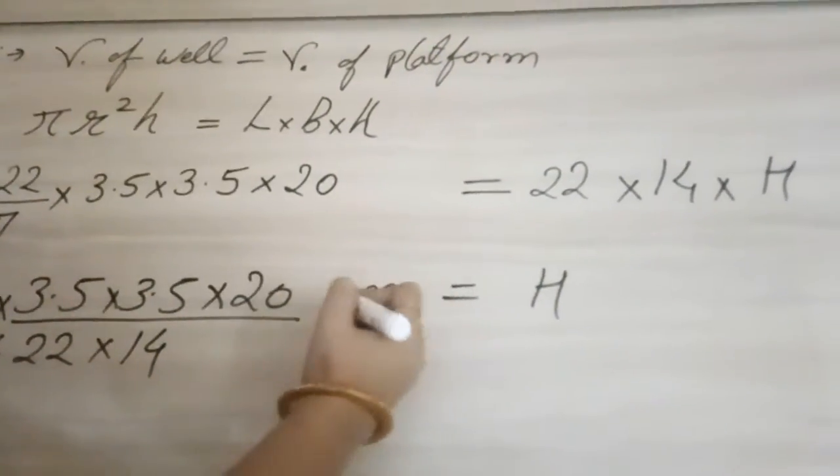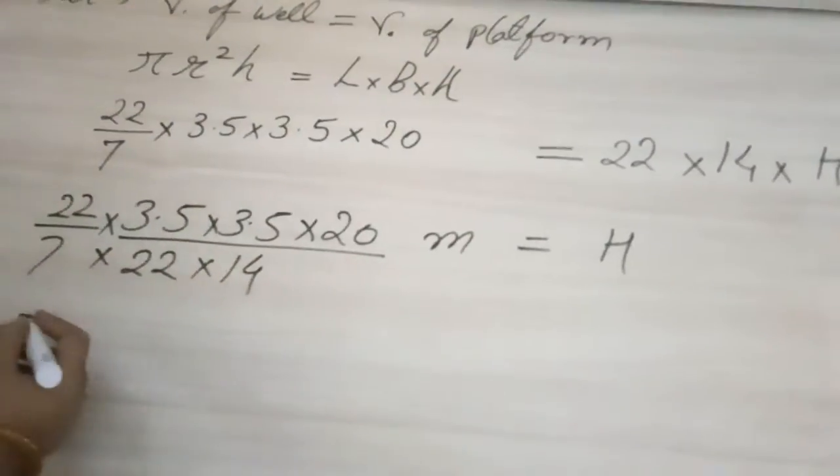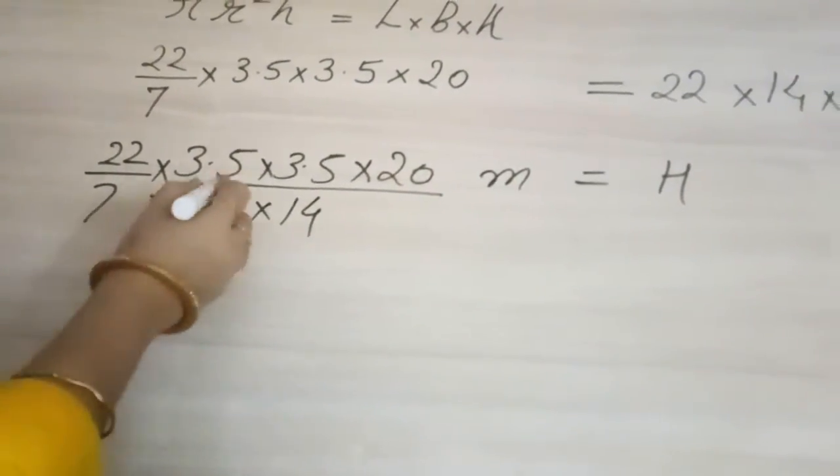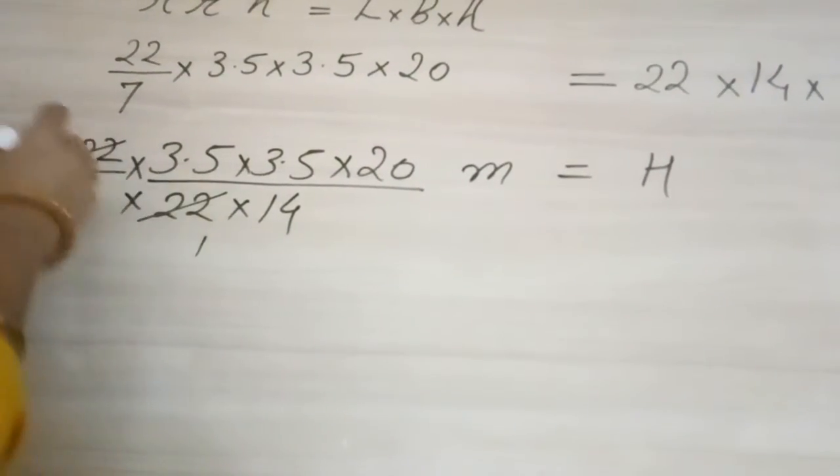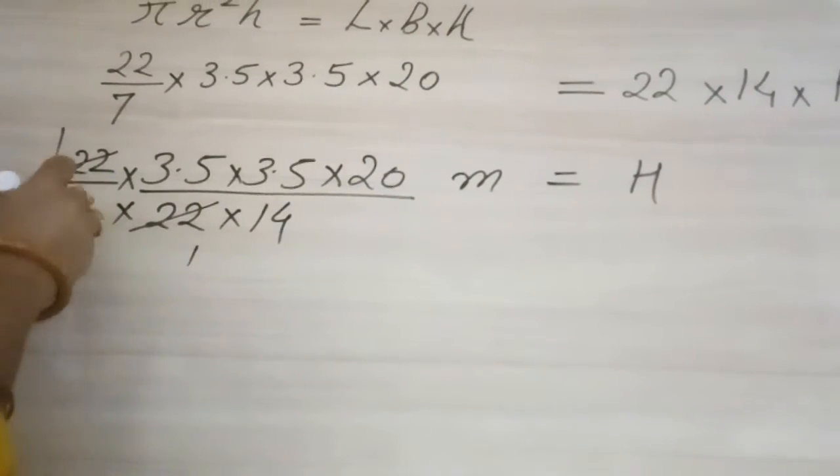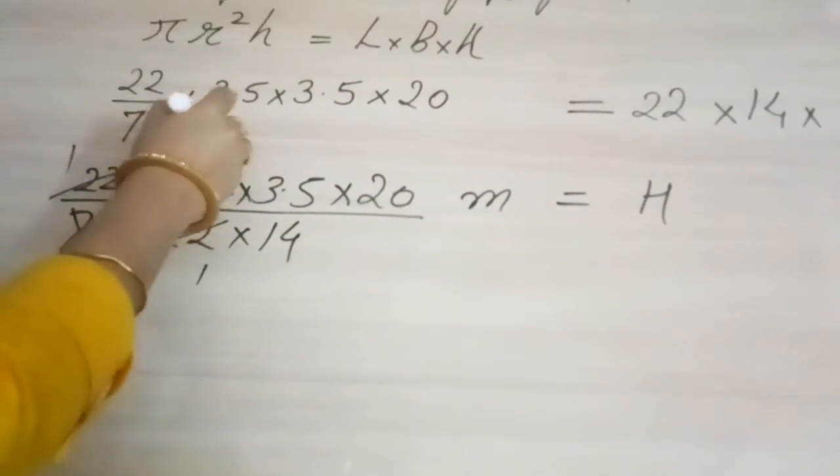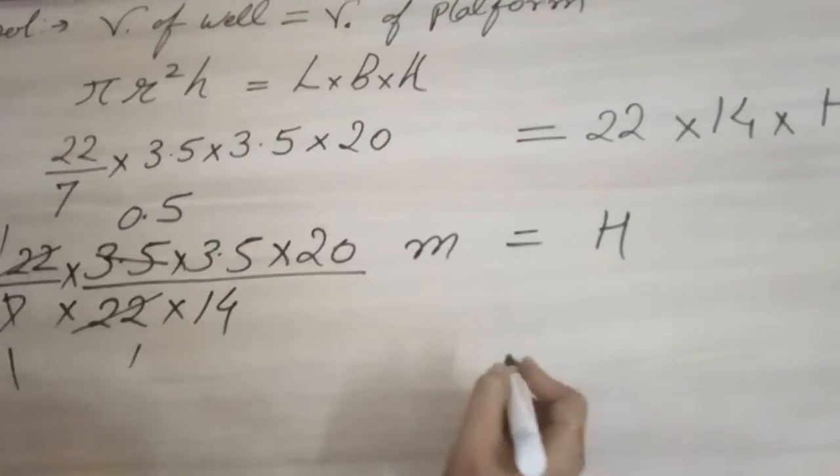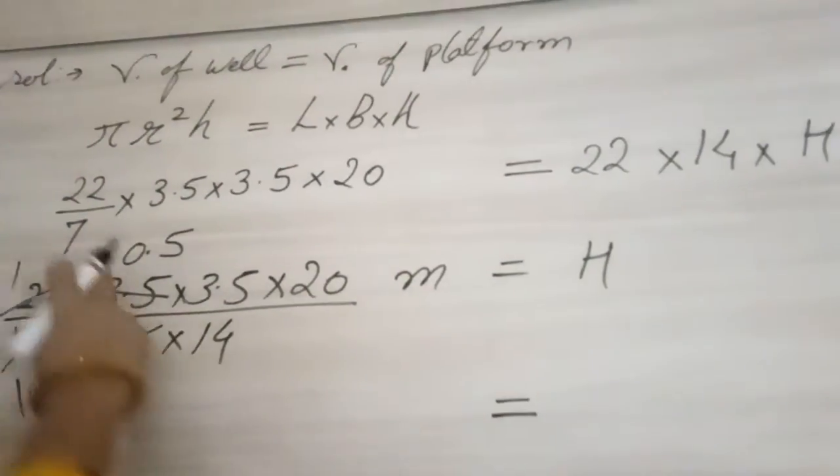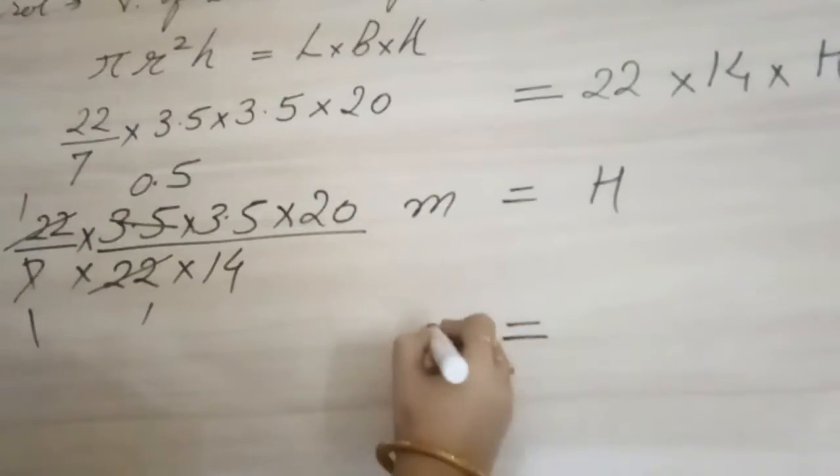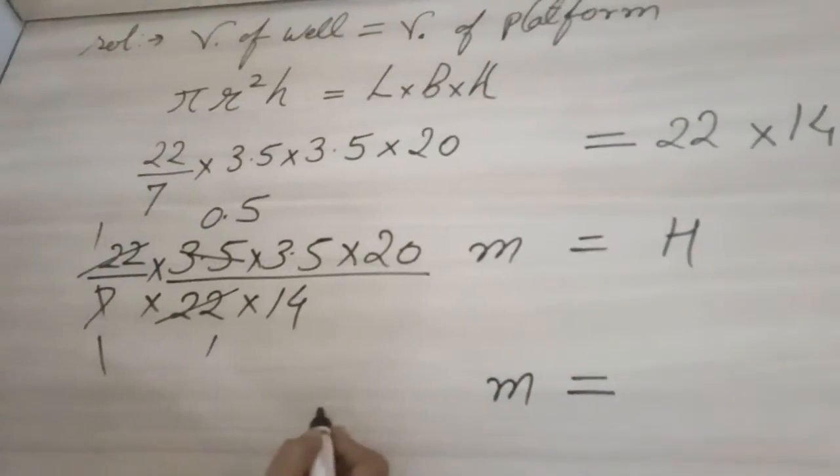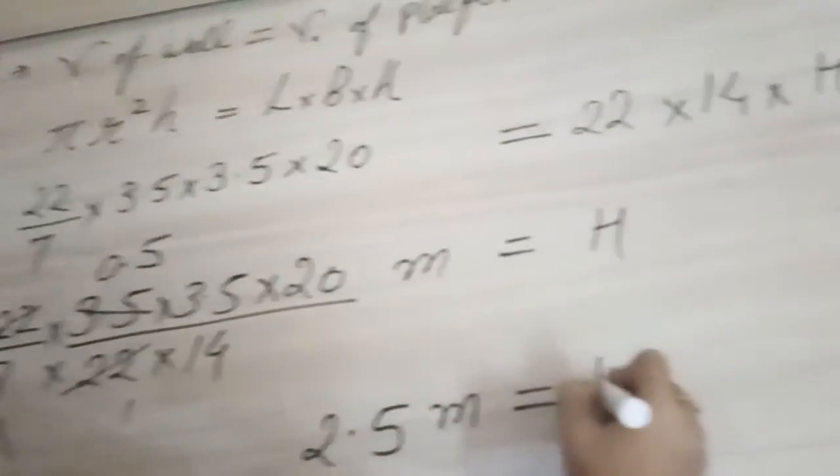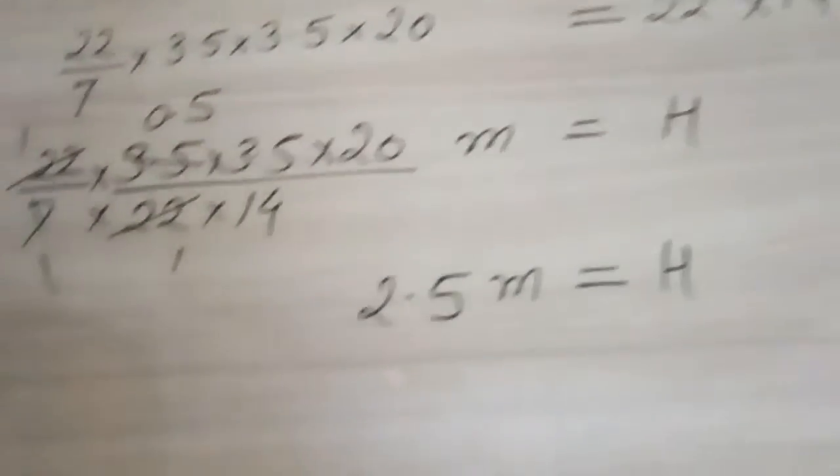And since it is height, your answer will come in meters because every measurement is given in the meter. And we will cancel upside down. Like 22 and 22 you can cancel by 1s or 7. You can cancel by 0.5. So multiply this 3 and divide it by 14. So our answer will come as 2.5 meter H.